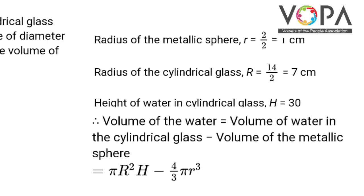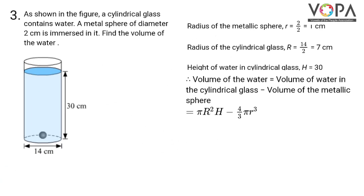Now volume of the water is equal to volume of water in the cylindrical glass minus volume of the metallic sphere. So when we put the formula π × R² × H minus 4/3 × π × r³.